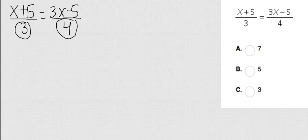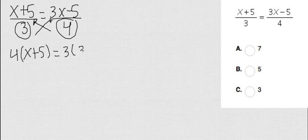What you're going to do when you have something divided by a number equals to something divided by another number, just solve it like a proportion, which is going to be multiplying this 4 with x plus 5 and this 3 with 3x minus 5. I highly recommend putting it in parentheses so you multiply the whole thing.